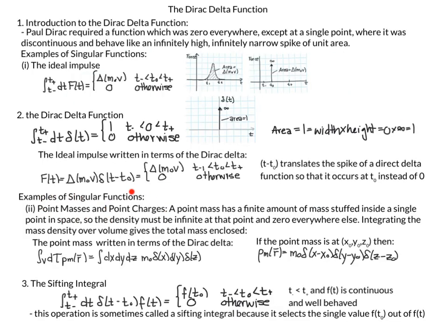Before moving to point masses and point charges, let's discuss the sifting integral. The integral of the Dirac Delta centered at T-naught times f(T): if our integral includes T-naught, the Dirac Delta becomes one and we're left with f(T-naught). If our integral does not include T-naught, the Dirac Delta is zero and the whole integral is zero. This is why it's called the sifting integral — it sifts out the single value f(T-naught).